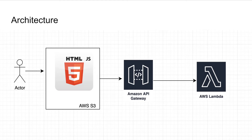So this is the architecture we want to deploy. We have a user that's going to call some HTML and JavaScript. This will be hosted in AWS S3, and then this JavaScript is going to call Amazon API Gateway. The API Gateway will be the bridge to talk to your Lambda, which processes input from a GET or POST request, does some logic, and returns a response that the HTML page will display.